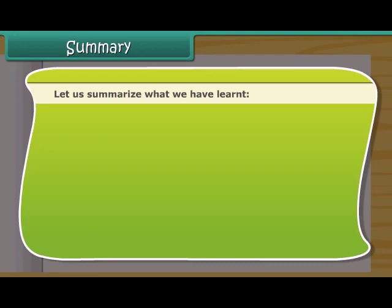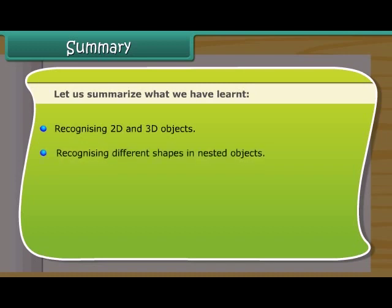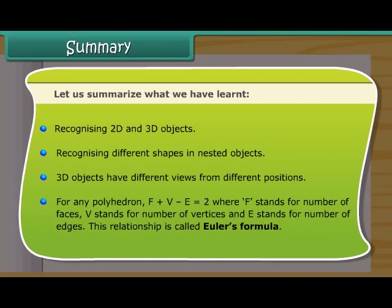Summary. Let us summarize what we have learned: Recognizing 2D and 3D objects. Recognizing different shapes in nested objects. 3D objects have different views from different positions. For any polyhedron, F plus V minus E is equal to 2, where F stands for number of faces, V stands for number of vertices, and E stands for number of edges. This relationship is called Euler's formula.